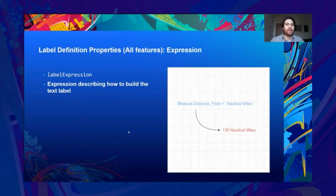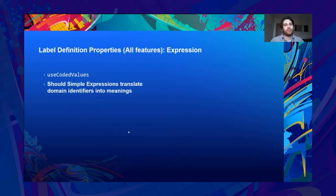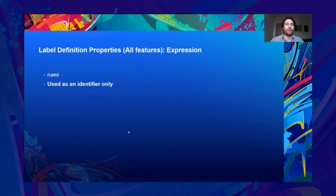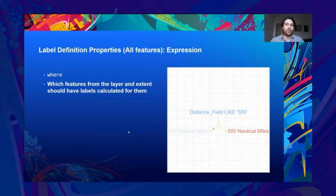Moving on to expression properties. As we've seen, and as Richard will go into more detail later, it's a string that defines how to build a label's text. Use coded values: this is more advanced and only works on simple expressions — it translates the main identifier into meanings. Name: an identifier or ID tag for the label definition, handy for interfaces dealing with a lot of label definitions. Where: a query to decide which features should have their labels calculated — Richard will also go into this in more detail later.